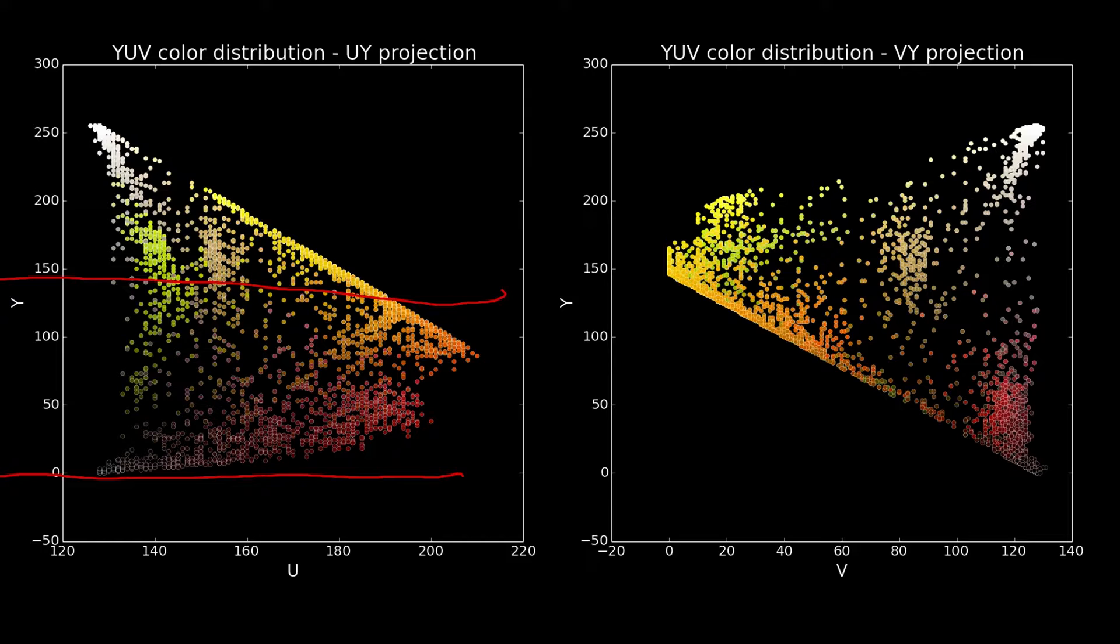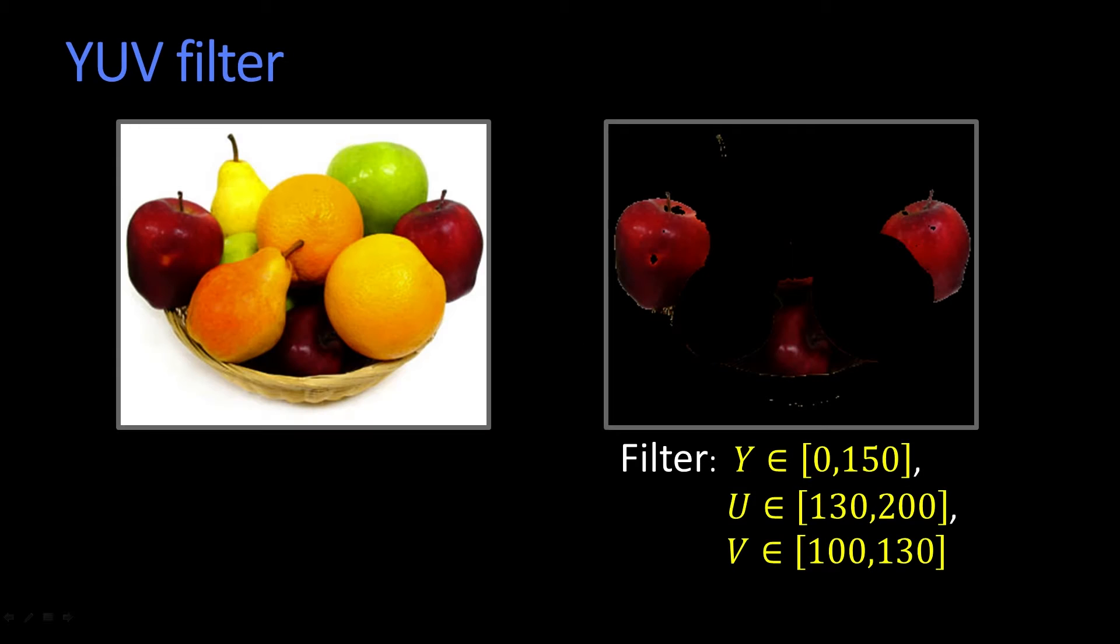And so that would eliminate... so here we are... that would capture all of these pixels. So now, if we use that, we include the Y value of 0 to 150, we get a much better selection of the red pixels.